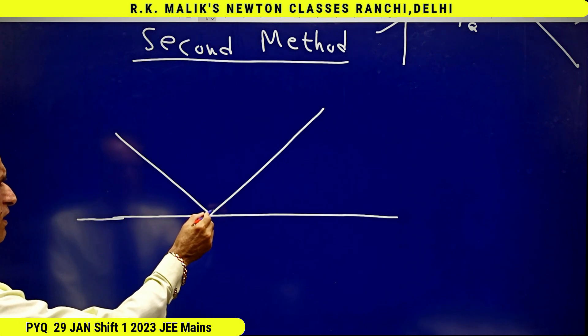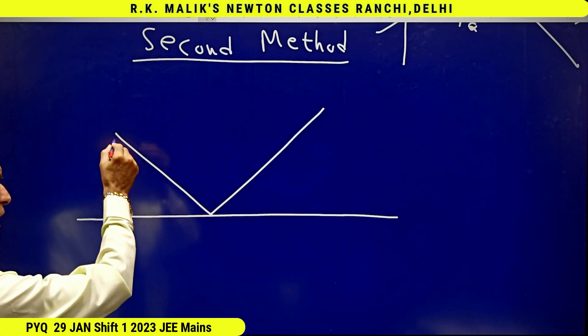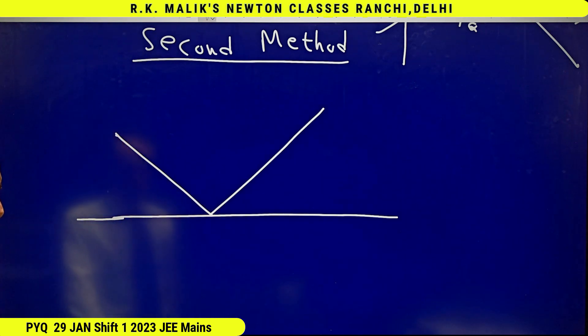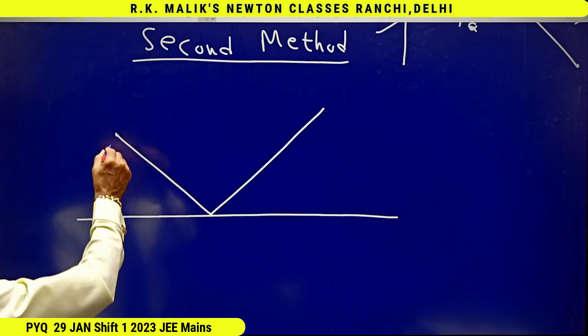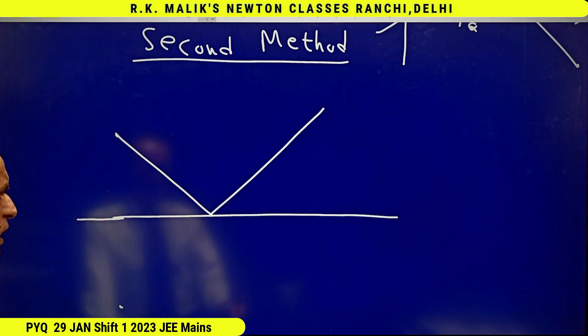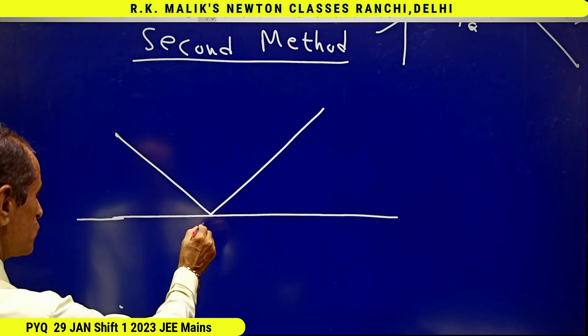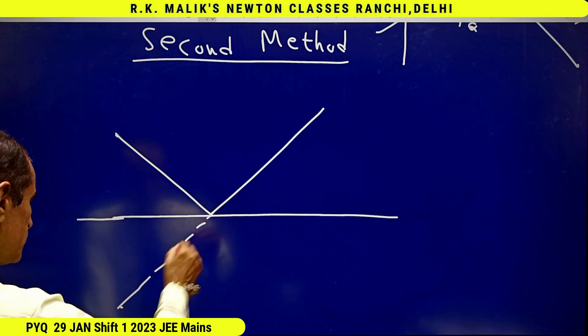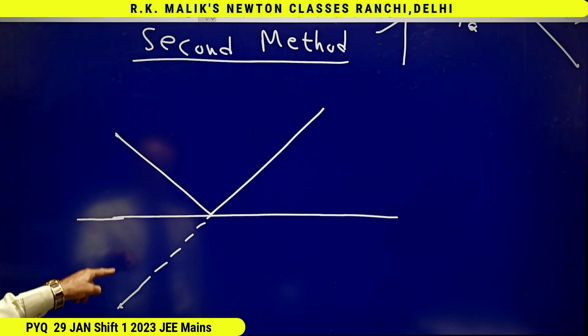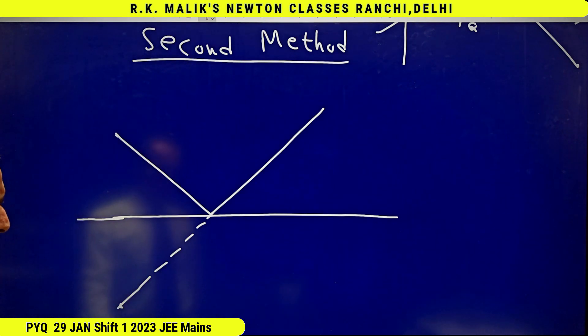...as if it is coming from the image of this point in this line. The image of this point in this line is somewhere here. I mean to say, if I use it backward, this line will be passing through the image point of this point in this reflecting surface. This is the property I am going to use.